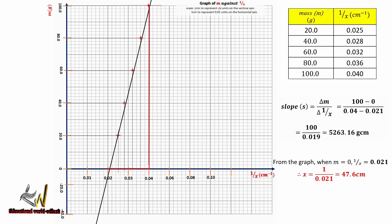They may also ask: what is the value of x-inverse when the mass is zero? From the graph, the value is 47.6 cm⁻¹, and I believe that corresponds to the value for the center of gravity of the meter rule.